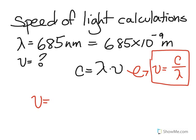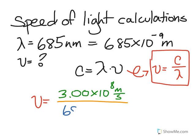So nu, which is the frequency, is equal to the speed of light, which happens to be 3.00 times 10 to the 8 meters per second, divided by the wavelength, which in this case is 685 times 10 to the negative 9 meters.